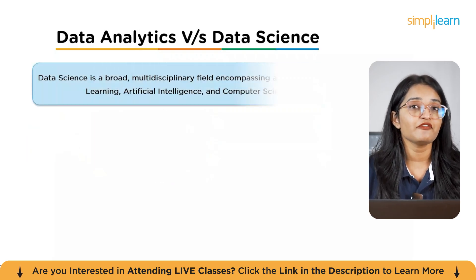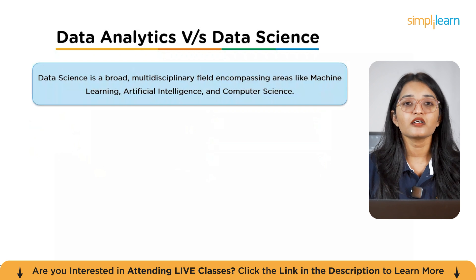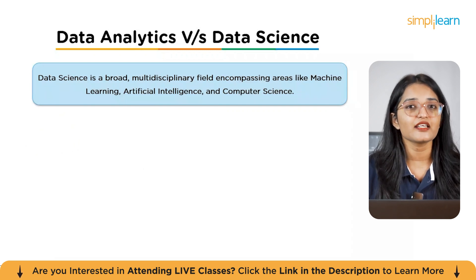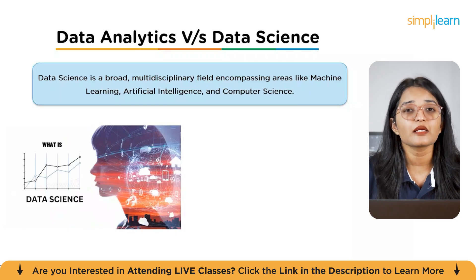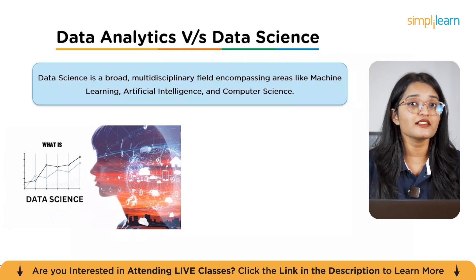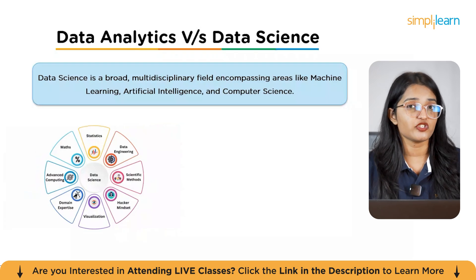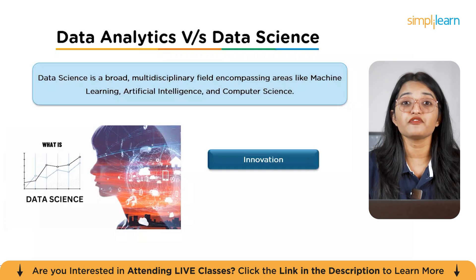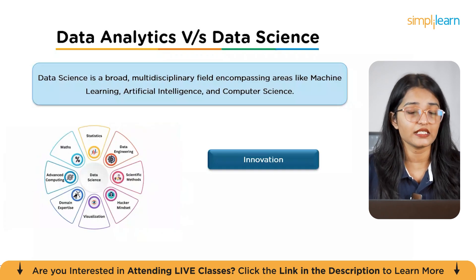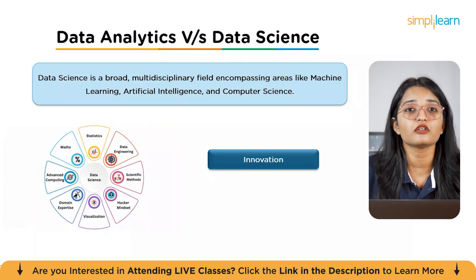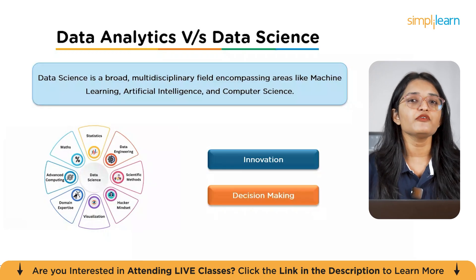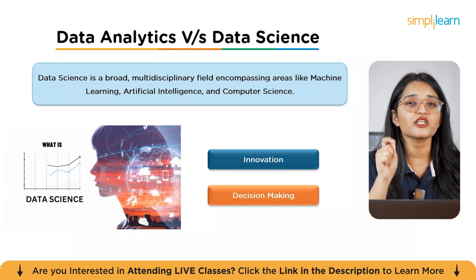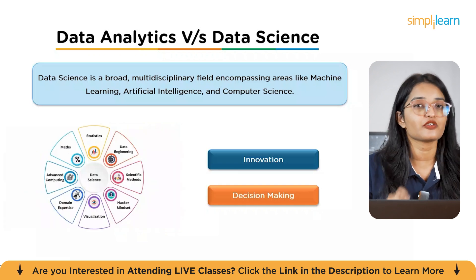Now let's look at the key definitions and how they differ. Data science is a broad multidisciplinary field encompassing areas like machine learning, artificial intelligence, and computer science. It involves researching vast amounts of unstructured data to ask and answer strategic long-term questions. Data scientists often build complex models and algorithms, focusing on innovation and strategic decision-making, and they usually hold senior roles.